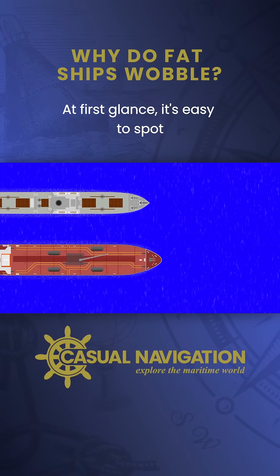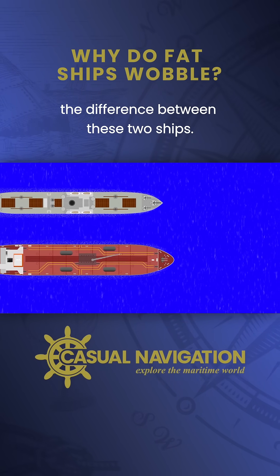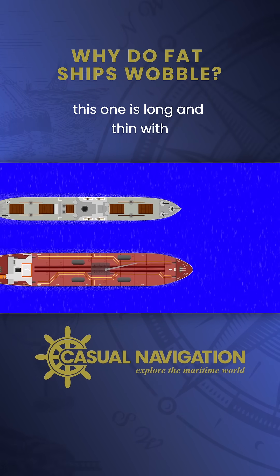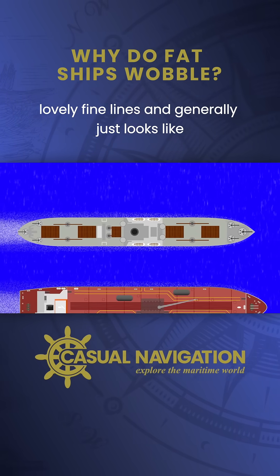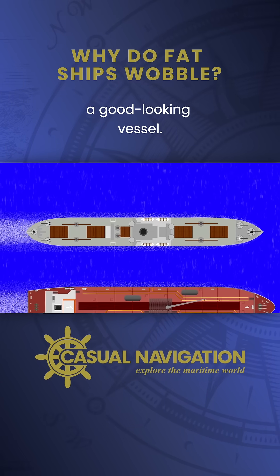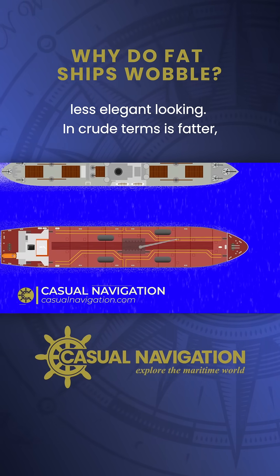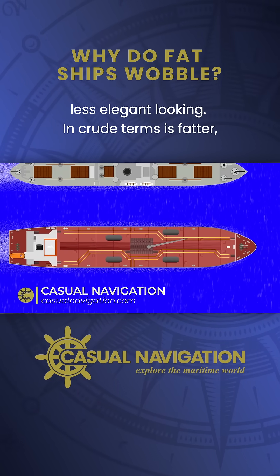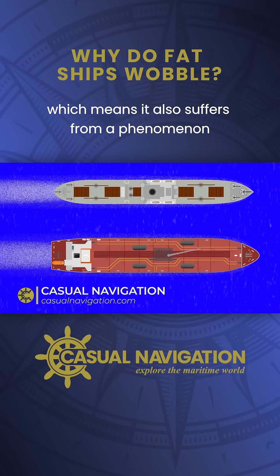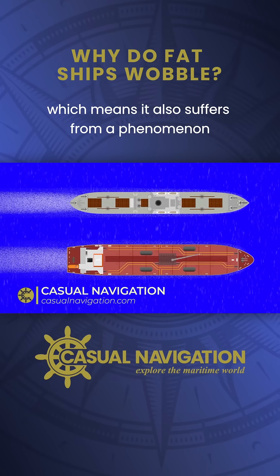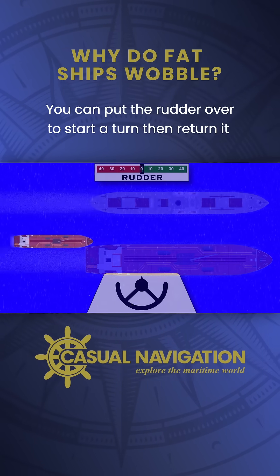At first glance, it's easy to spot the difference between these two ships. This one is long and thin with lovely fine lines and generally just looks like a good-looking vessel. This one, on the other hand, is much chunkier and less elegant looking. In crude terms, it's fatter, which means it also suffers from a phenomenon that I like to call the fat ship wobble.